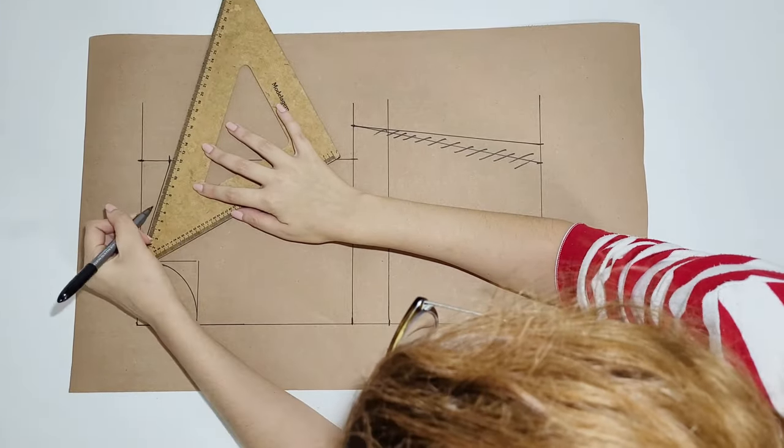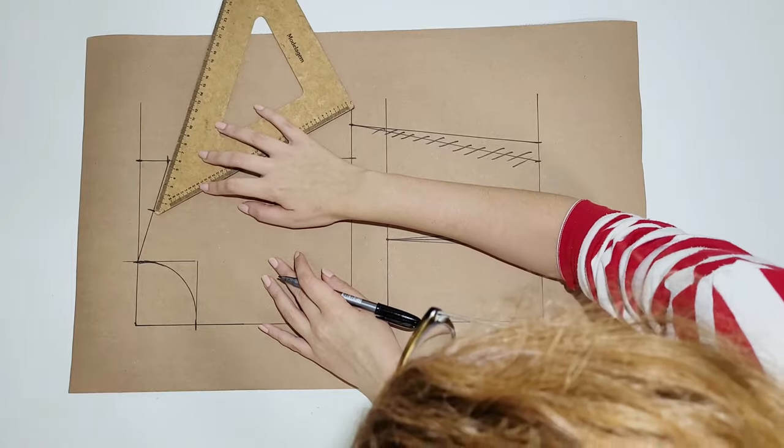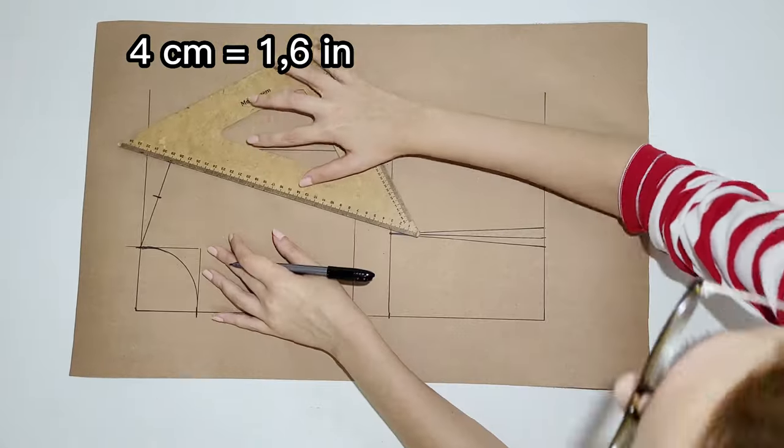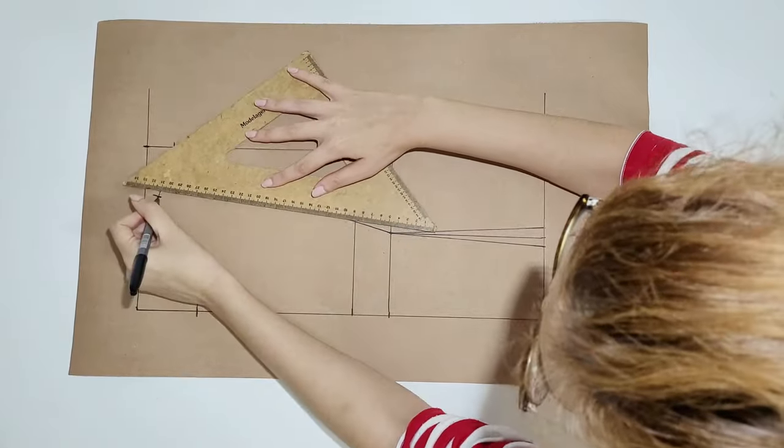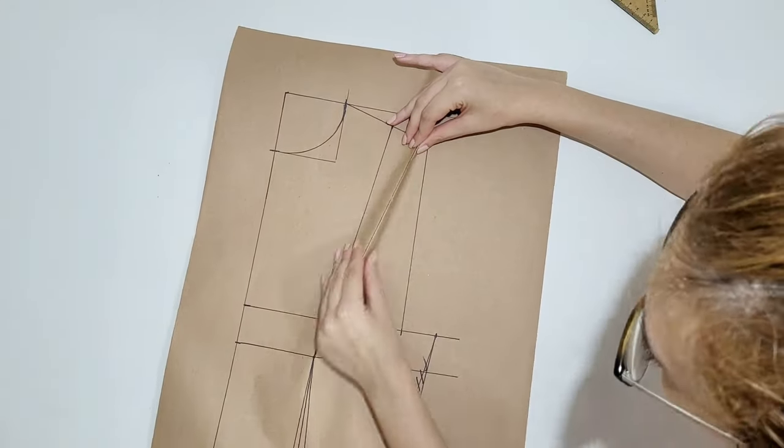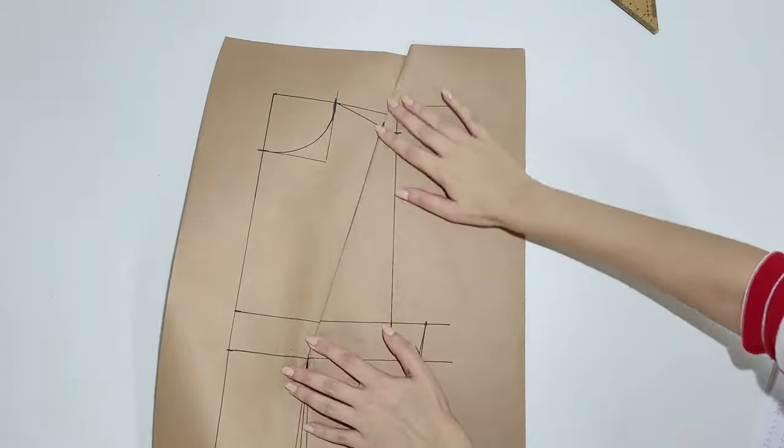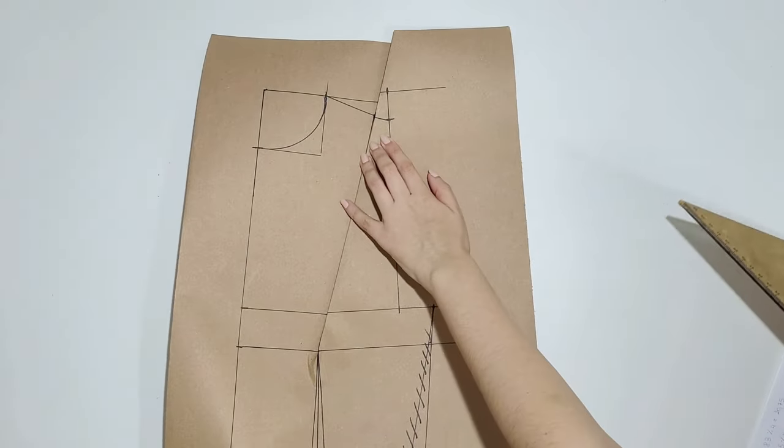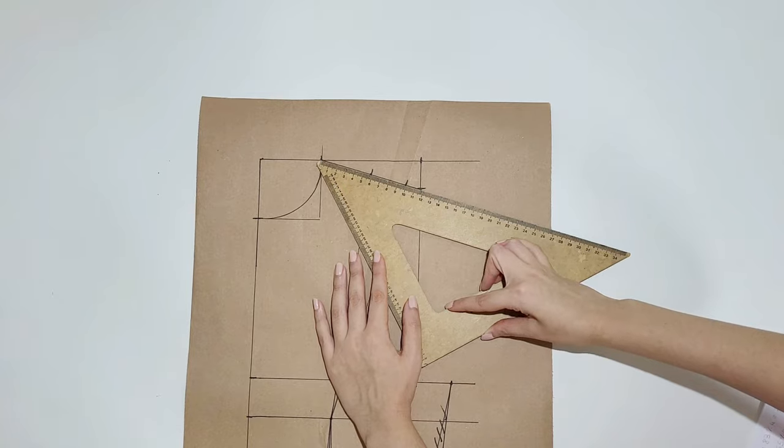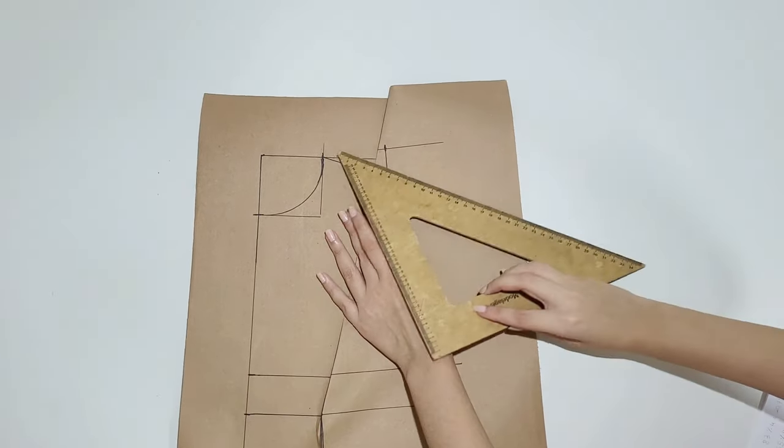Now mark the middle of the shoulders and to the right, mark 4 cm. Connect those 2 points down to the center of the bust line. Now fold the shoulder darts as I'm showing in the video. And measure the total length of the shoulders before. And redraw the shoulder line with the same measurement as before.